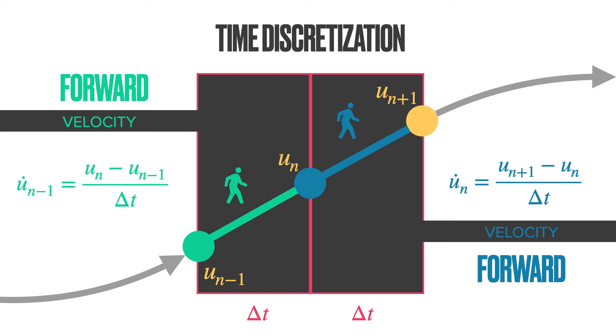However, the velocity at time N can also be computed by using the values at UN minus 1. This is the basic idea of the central difference scheme.